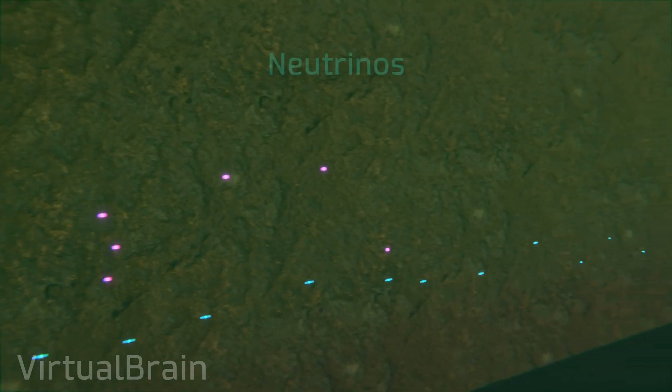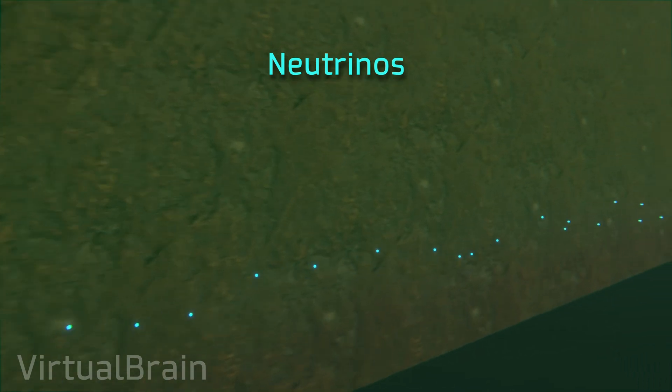And finally we have neutrinos, which thanks to all the characteristics I mentioned previously, penetrate through other objects practically without being affected, being able to cross hundreds of kilometers under the ground without stopping, even crossing the planet in some cases.